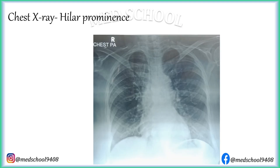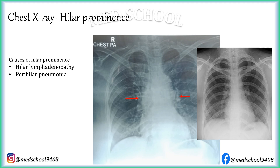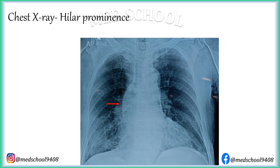In this x-ray, both the hila are very prominent. One can appreciate this if these hila are compared with the normal hila. Causes of hilar prominence are hilar lymphadenopathy, perihilar pneumonia and pulmonary vessel enlargement. In another x-ray, only the right hilum is prominent. Many times it is difficult to know the exact cause of hilar prominence from the x-ray alone. In such cases, clinical correlation and CT thorax are very useful.